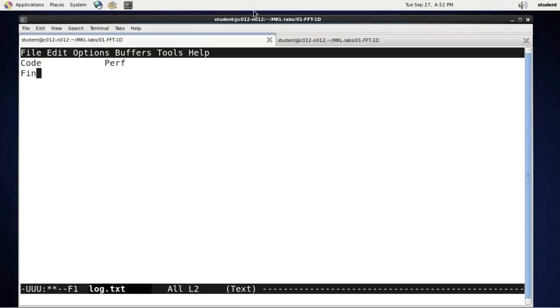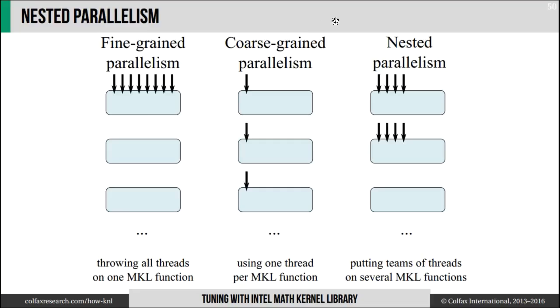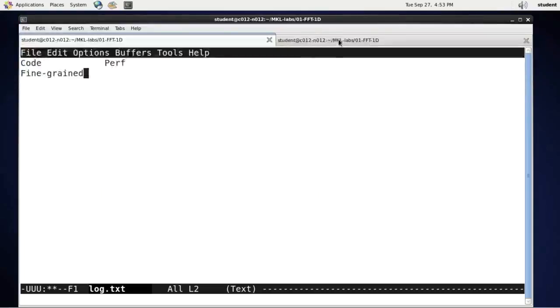So my first code is fine-grained parallelism, meaning that in this scenario I do the following: I put all threads on one dataset. When they are done, all threads go to the next dataset.